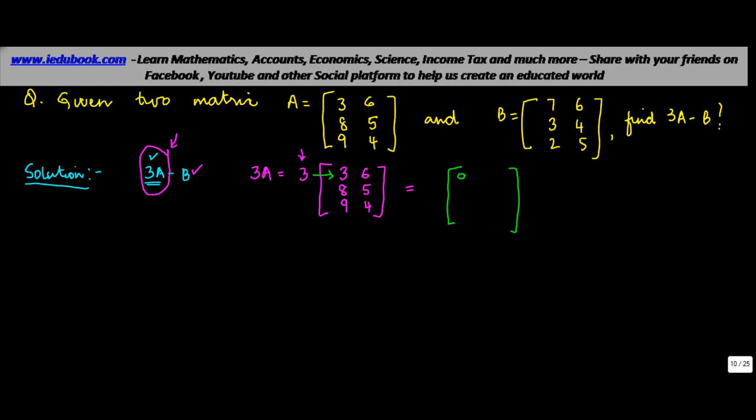First we multiply 3 with 3 which gives us 9. Then 3 with 6 gives 18. After that, 3 with 8 gives 24. Then 3 with 5 gives 15. We multiply 3 with 9 to get 27, and lastly 3 with 4 gives 12. That way we've got the value of 3A.